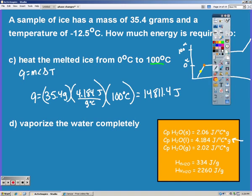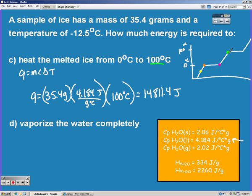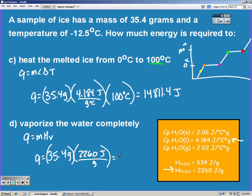Next, we're going to vaporize that water. So we're going to go from the green dot to the red dot. Notice no temperature change while it's being vaporized, so it's just Q equals MHv. Mass hasn't changed, and we know our heat of vaporization because it's a constant. And you get 80,004 joules.